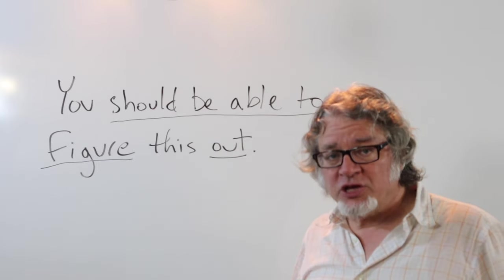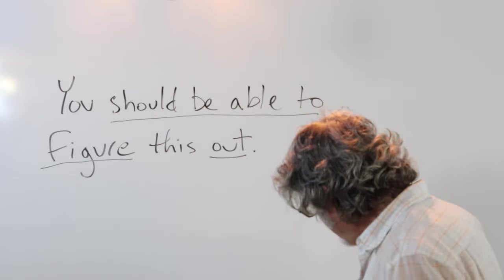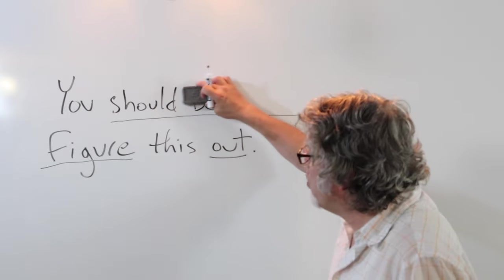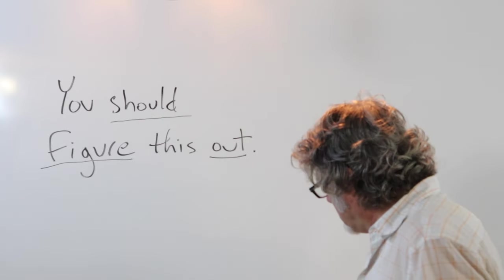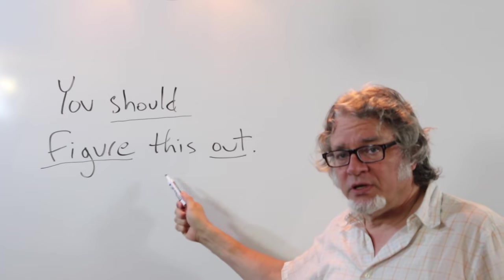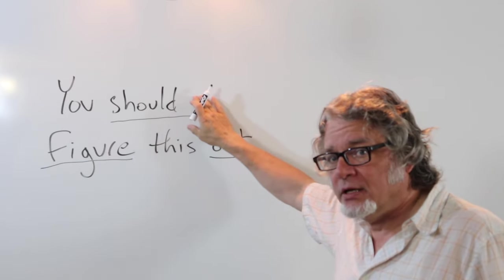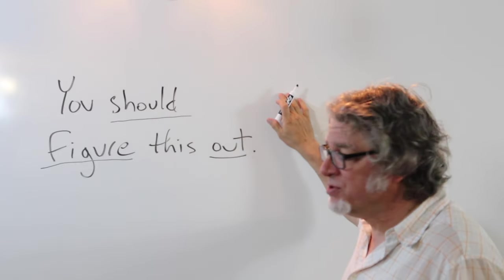The expectation is that you can do something that is difficult. If you take 'be able to' away—you should figure this out—that's a possibility as well, but it's probably more common to use 'be able to' right here.